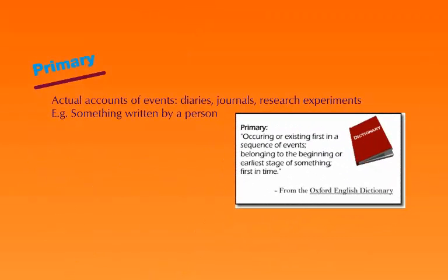A primary source is an actual account of events — a diary, a journal where somebody's been keeping track of an event, a research experiment where somebody actually performed the experiment and is telling you about what they did. Something written by a person: if you're researching an author, something written by Maya Angelou is the first primary account of her thoughts. The Oxford English Dictionary defines primary as occurring or existing first in a sequence of events, belonging to the beginning or earliest stages of something. Historical documents are great examples — the original documentation of something.